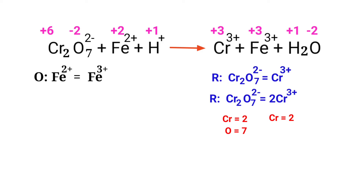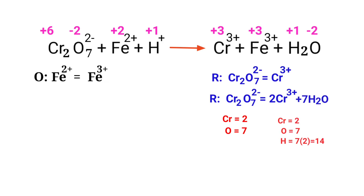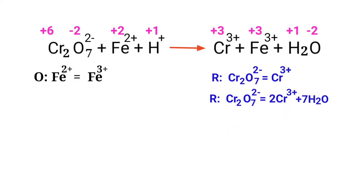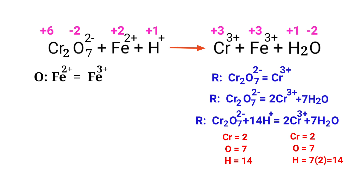Now balance the oxygen atoms by adding water molecules. The oxygen atoms are balanced. Next, balance the hydrogen atoms by adding H+ ions. The number of atoms are now balanced in the reduction half reaction.